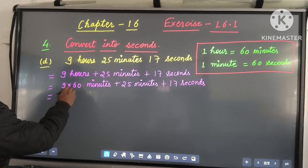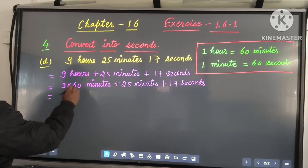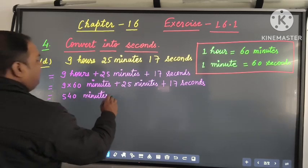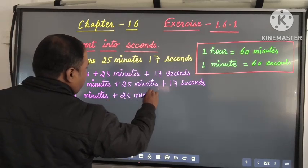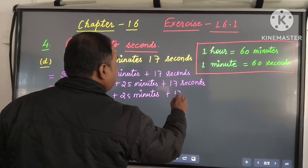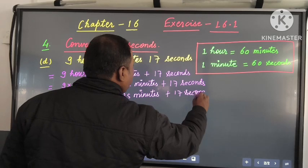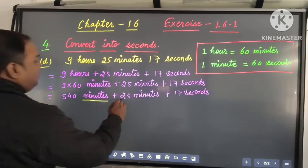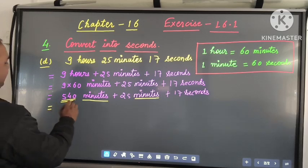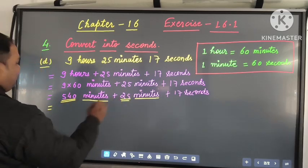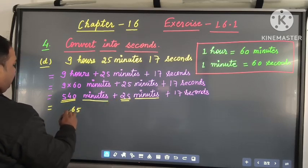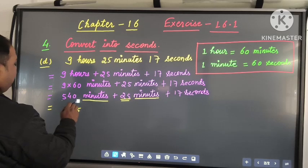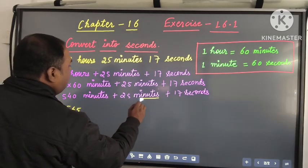Multiplying 9 by 60 gives 540 minutes, which is also in minutes. So we will add 540 and 25: 0 plus 5 is 5, 4 plus 2 is 6, and 5 remains, giving us 565 minutes.